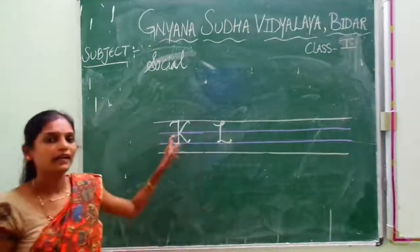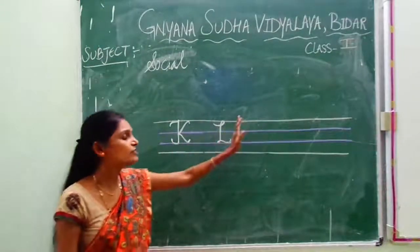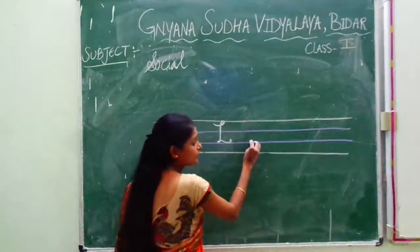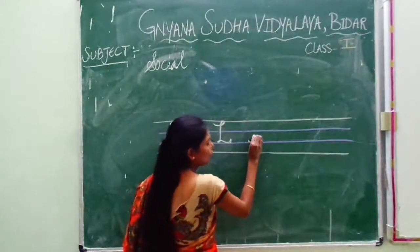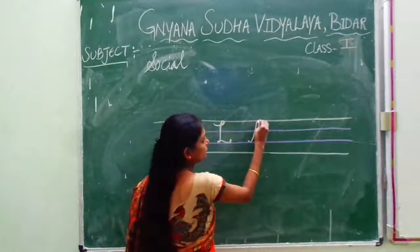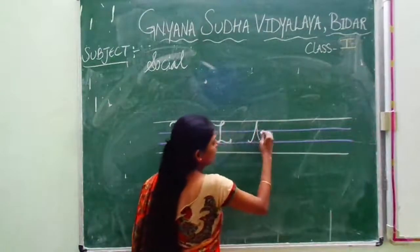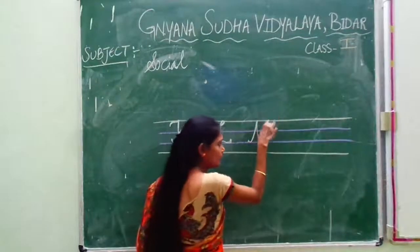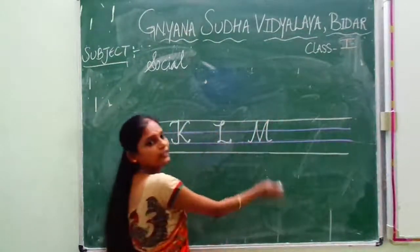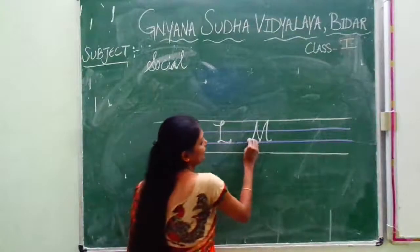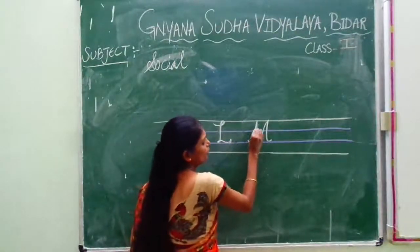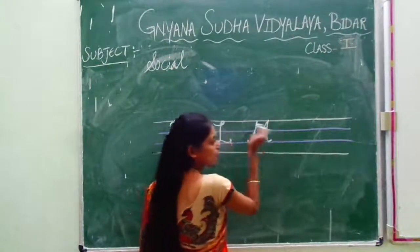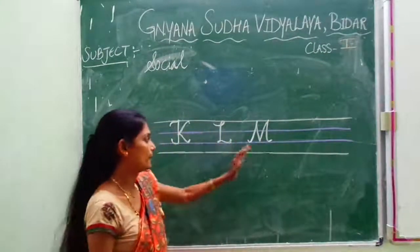So, K, N. Now again leave some space and write N. See how to write capital cursive N. Start from your blue line, go up, then again come down, touch blue line, again go up, touch pink line, again come down. This is called capital cursive N. Once again I am showing you how to write capital cursive N. This is called cursive N.